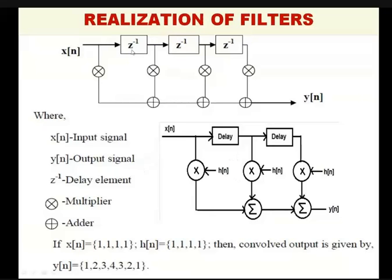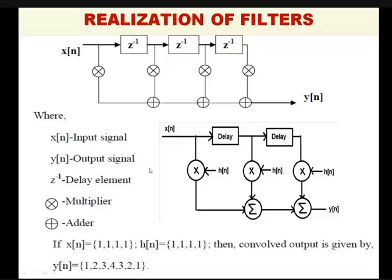In the Z-transform domain, every delay means it will be a Z-inverse. So Z-inverse is the delay element and x[n] is the input. This is a three-tap filter, and this is a four-tap filter where there are four coefficients h[n]: h[0], h[1], h[2], h[3]. The input comes through this, and after the multiplication, the results will be added. You will get y[n] — where x[n] is the input signal and y[n] is the output signal. Z-inverse is the delay element, which is the time interval T.